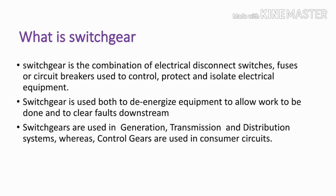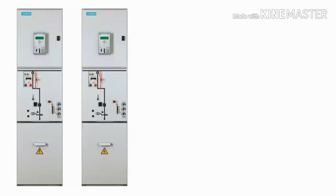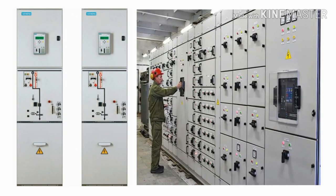See this picture — this is the low voltage switchgear panel. The top side components are the low voltage components like relays and protection devices. In the middle are the circuit breakers, and at the bottom the CTs and PTs are placed. See this other picture — this is the medium voltage switchgear panel; similarly, the top has protection devices, the center has the breaker, and the bottom has the CT and PT.